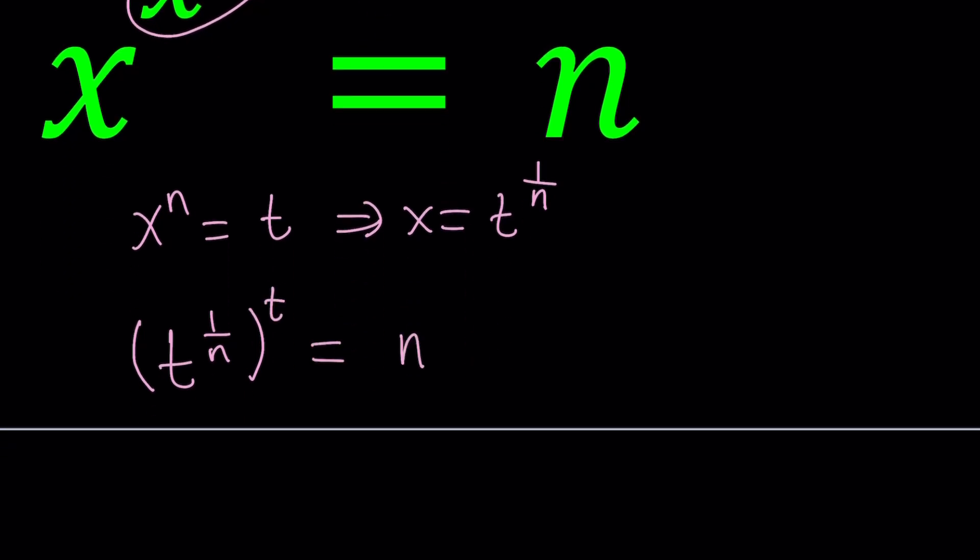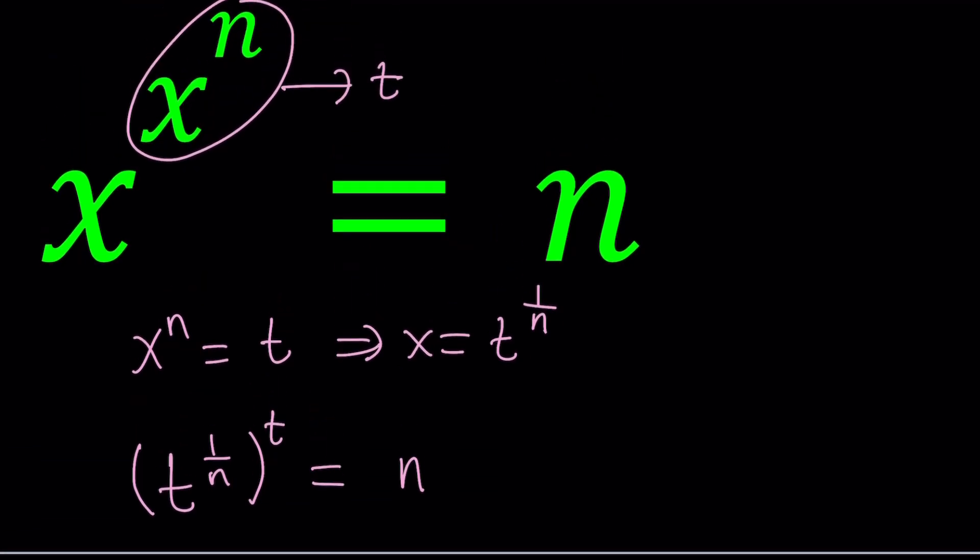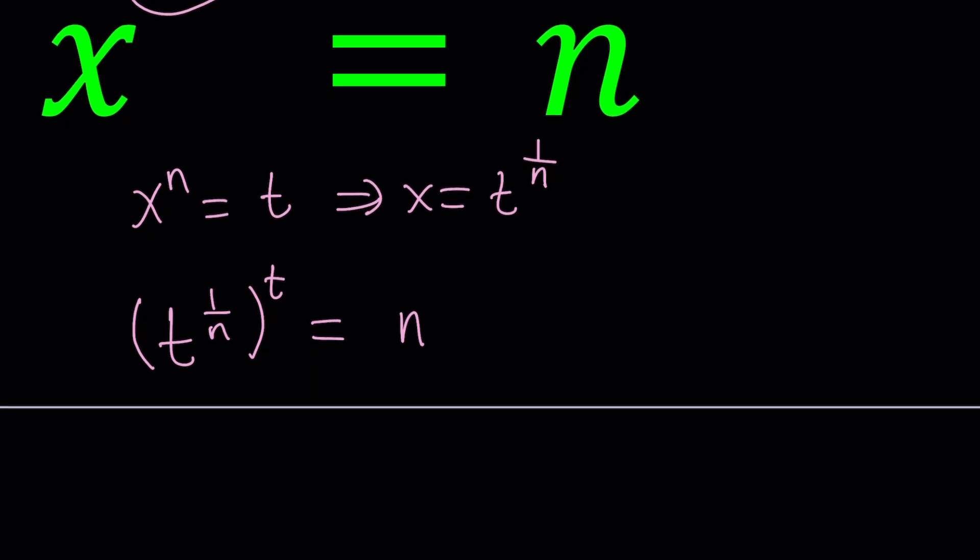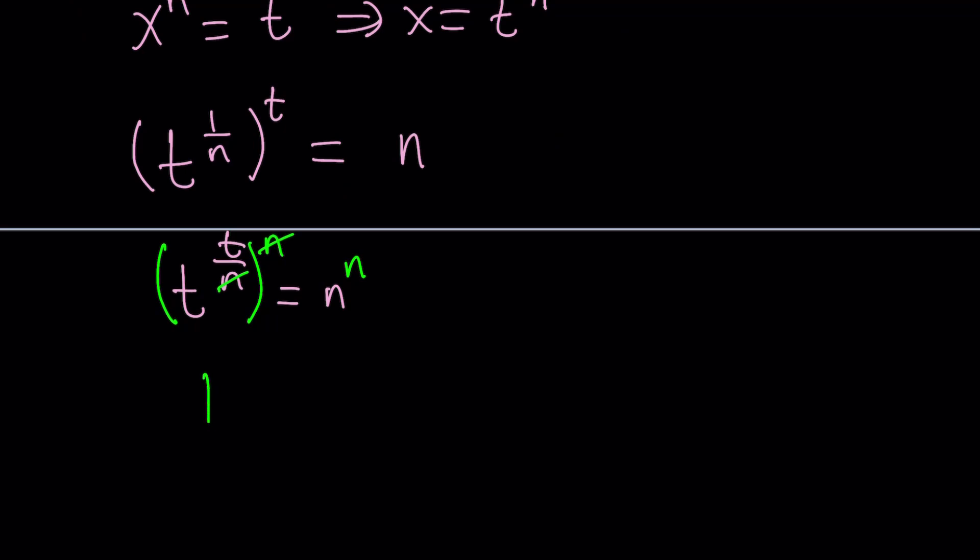You can also raise both sides to the nth power. That's the more general method, which is pretty common. But I like to do it this way for two reasons. One, solution is easier. Two, the function that we're going to be looking at is going to be easier to handle. So now this becomes t to the power t over n equals n. Let's go ahead and raise both sides to the power n. And this is the critical part. n cancels out and we end up with t to the t equals n to the n.